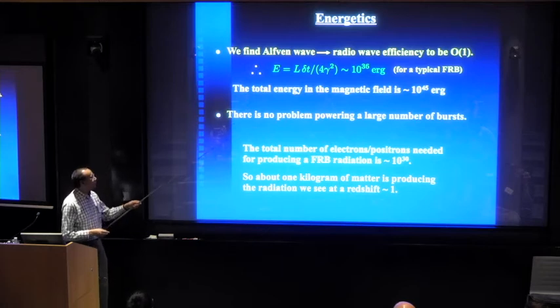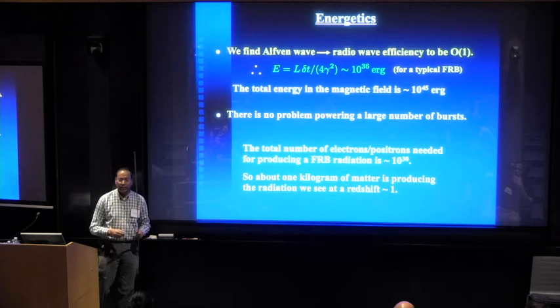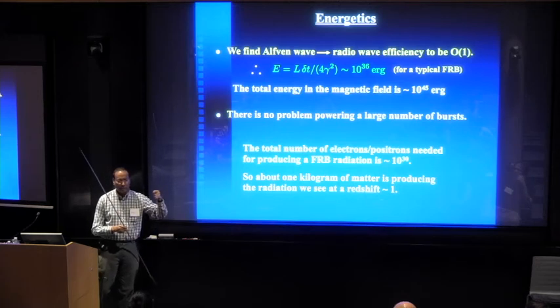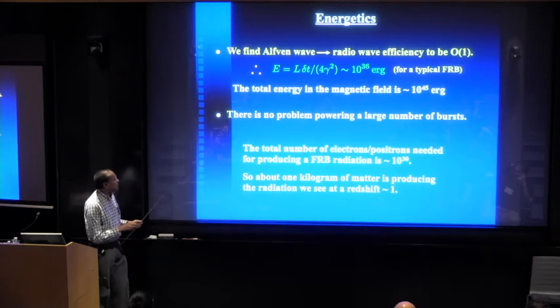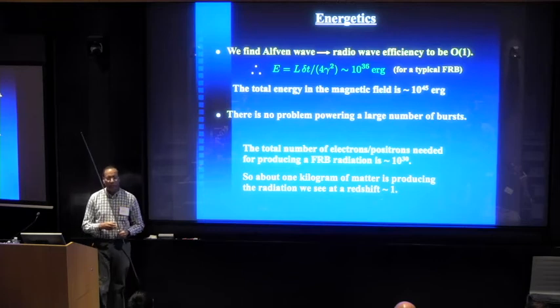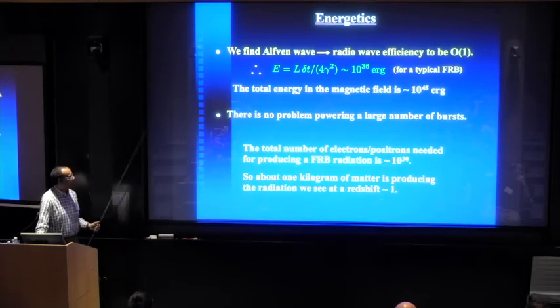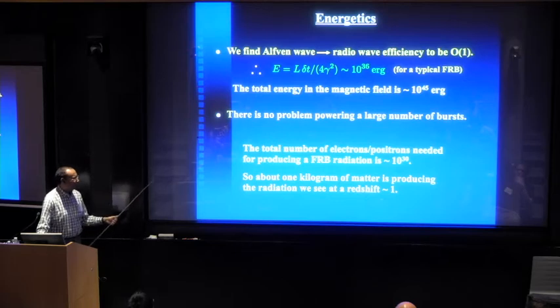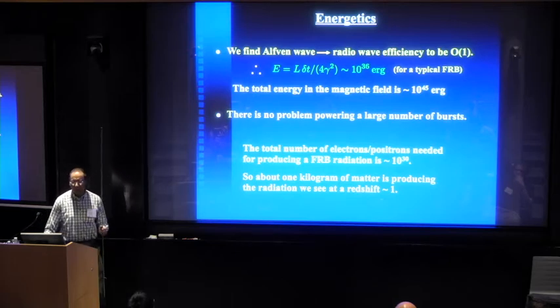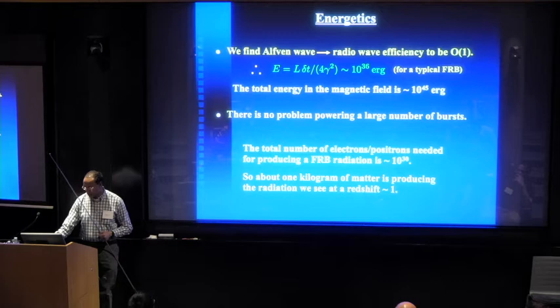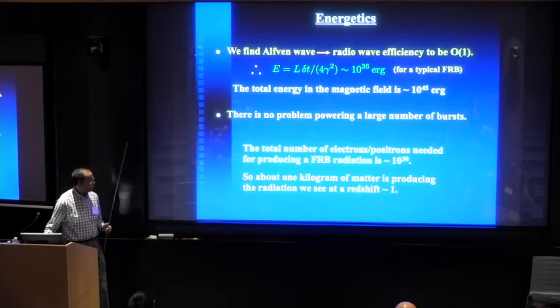So the total energy in an outburst for this particular model is not very different from the energy requirement for FRB, which is correcting for the beaming. These things are beamed within an angle of 1 over gamma. Gamma is the Lorentz factor of these clumps. So energy is 10^36 ergs or so. And the total energy in the magnetic field is much larger, so this is clearly not a problem producing multiple bursts or even a large number of bursts.